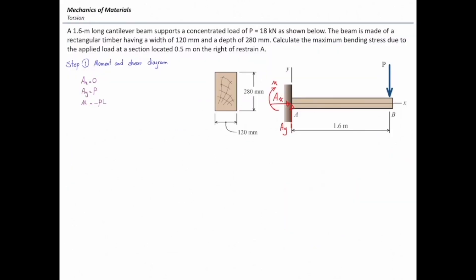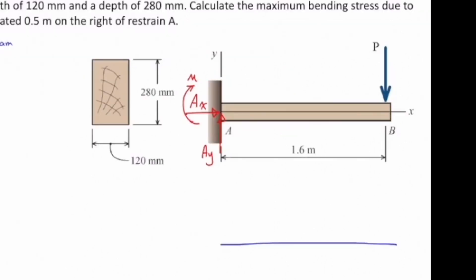Now we can do shear and moment diagrams for this problem. Let us start with shear diagram. As always, we start from the left side. At the left side, there is a force, a restrain support force, which is equal to P, 18 kN going upward.